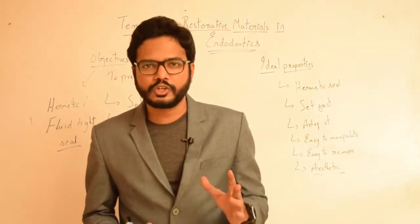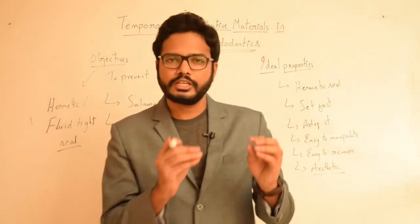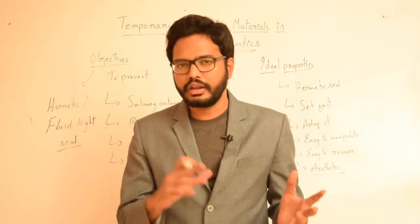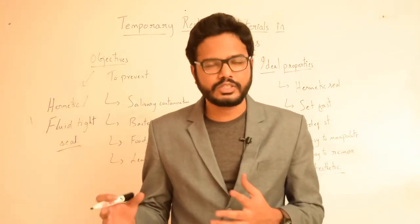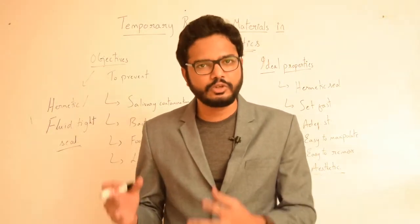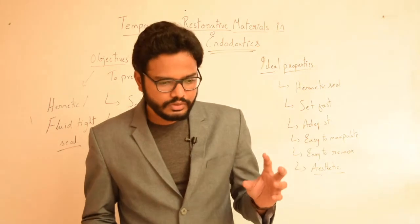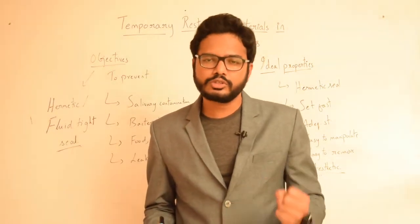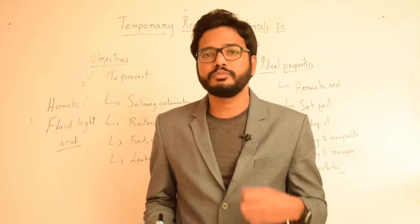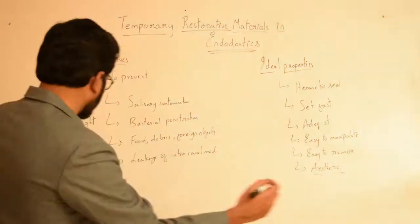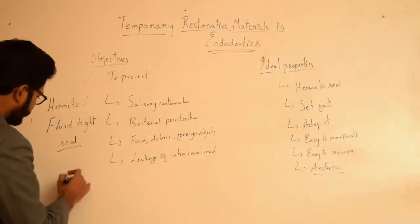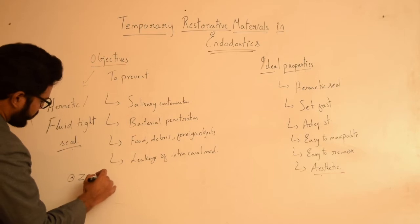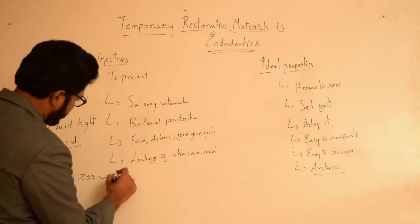Starting with zinc oxide eugenol — it's available as powder and liquid. The powder contains zinc oxide and the liquid chiefly contains eugenol. The drawback of zinc oxide eugenol cement is that it has low strength and is more prone to leakage.